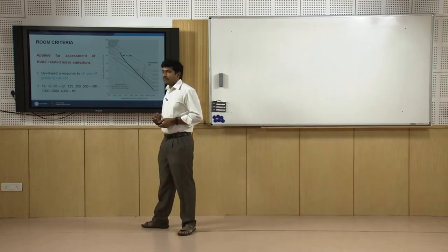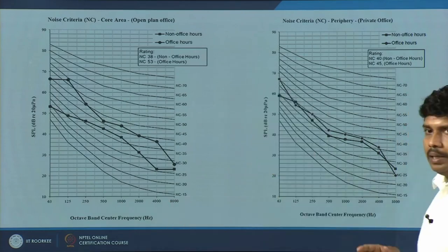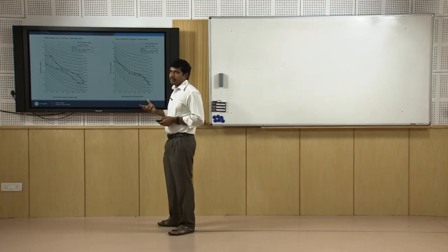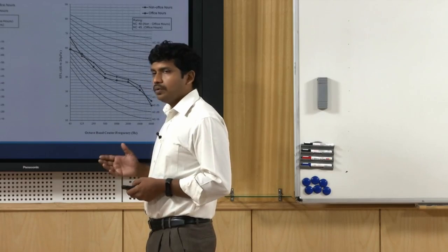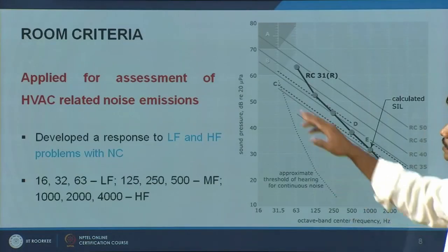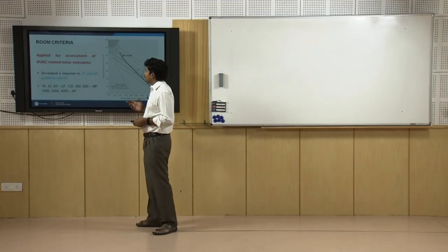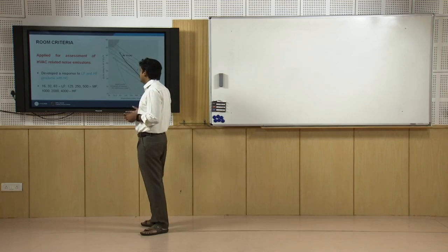There is another version for defining background noise level. If you look at the NC graph, it covers 63 Hz to 8000 Hz. However, to understand the impact of HVAC systems — which comprise fans, pumps, motors, air handling units, turbulent airflow — you need to go beyond those frequencies. This led to Room Criteria, commonly referred to as RC. The current version is RC Mark 2, with several improvements over earlier versions.